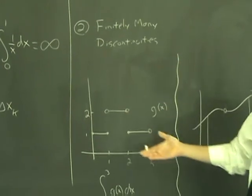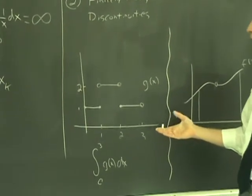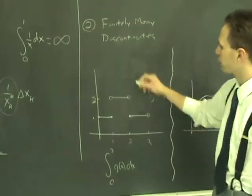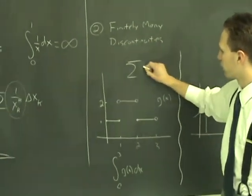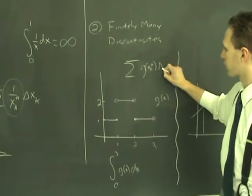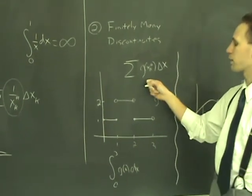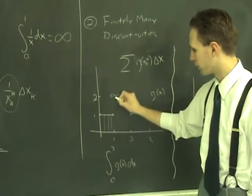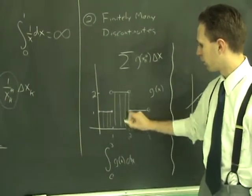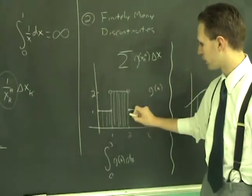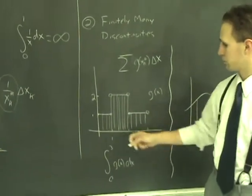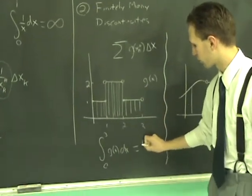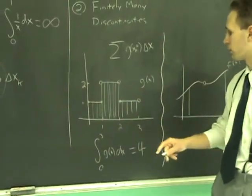For example here, this is a perfectly integrable function even though it's discontinuous here and here. If you do this kind of limit, g of x_k star, it all comes back to this. If you were to do this kind of sum with this function, you can only get a bunch of rectangles here over the entire thing, and what you're going to wind up with is just the area of this whole shape here. One, two, three, four, so that's perfectly integrable. That's fine.